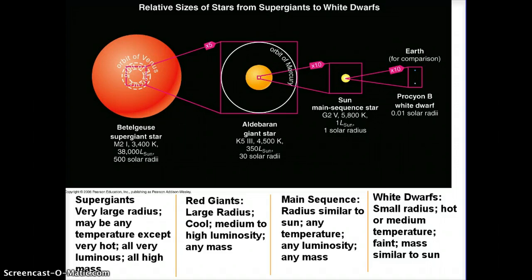And then white dwarfs, we're going to see, are all very small. They're all about the same size, about the size of Earth. They're white, which means they're hot or medium temperature. They're at the bottom of the HR diagram, which means they're faint. And their mass, it turns out, for reasons we'll discuss in a later lecture, is all pretty close to similar to the sun.